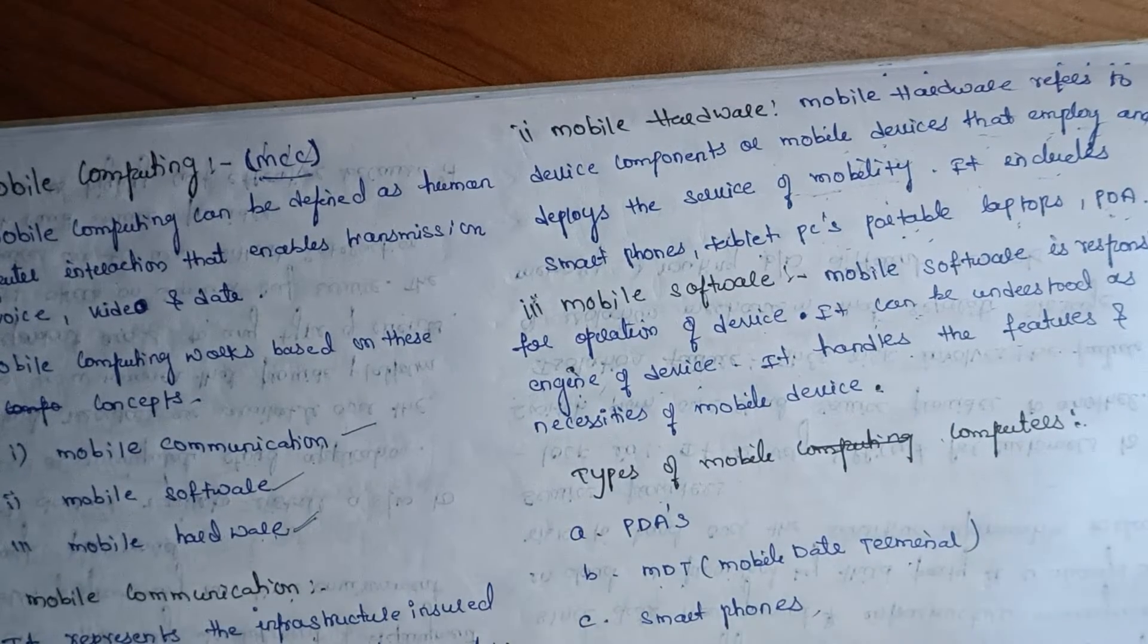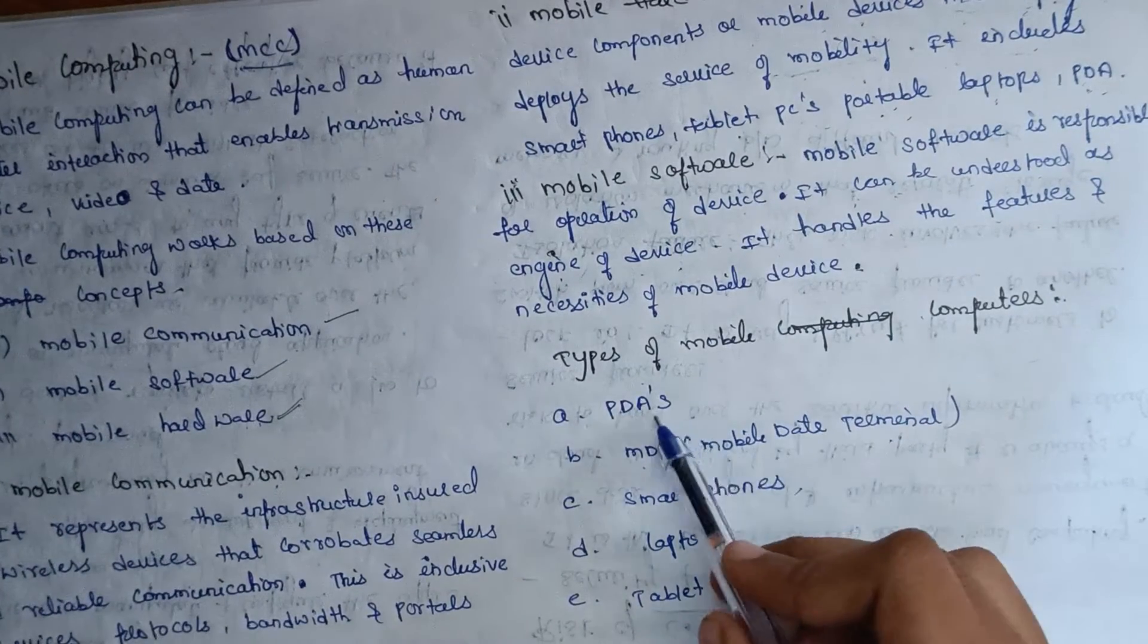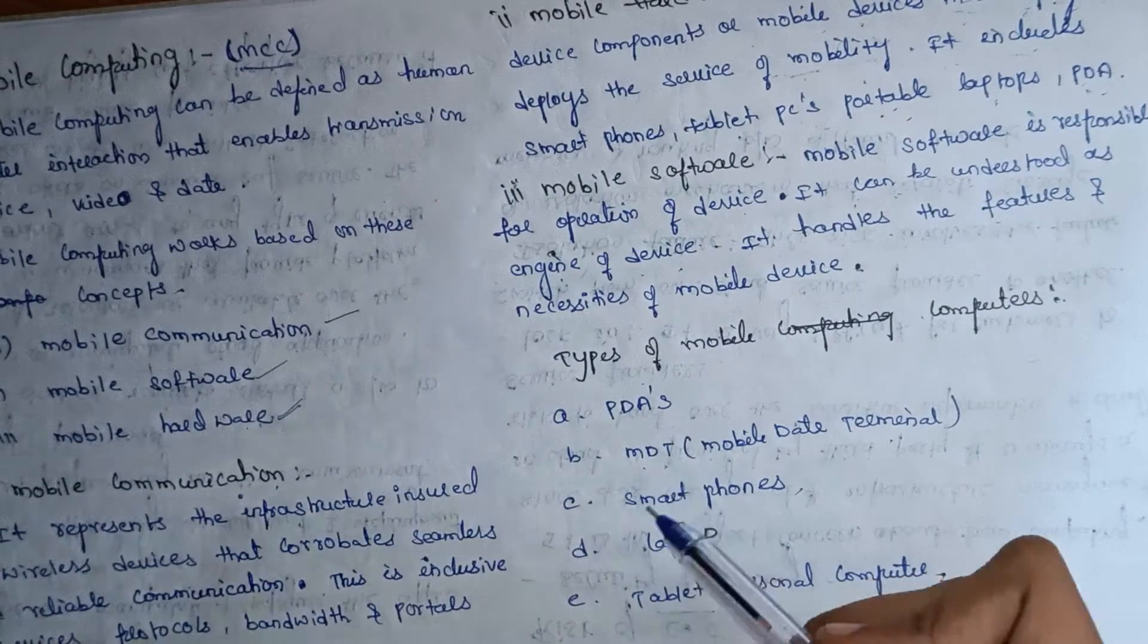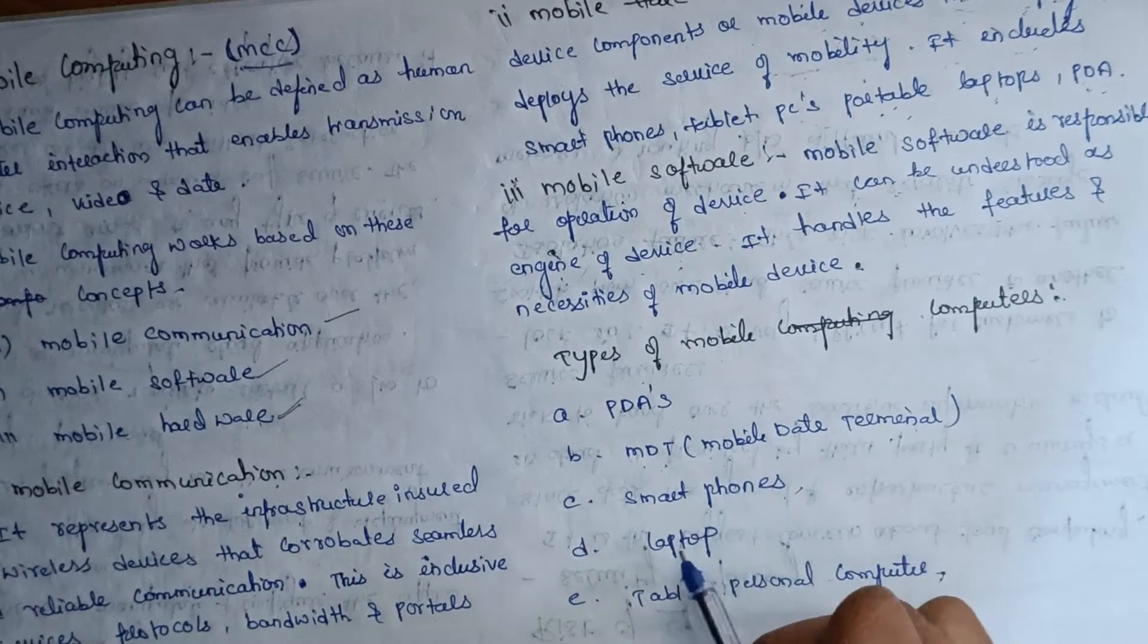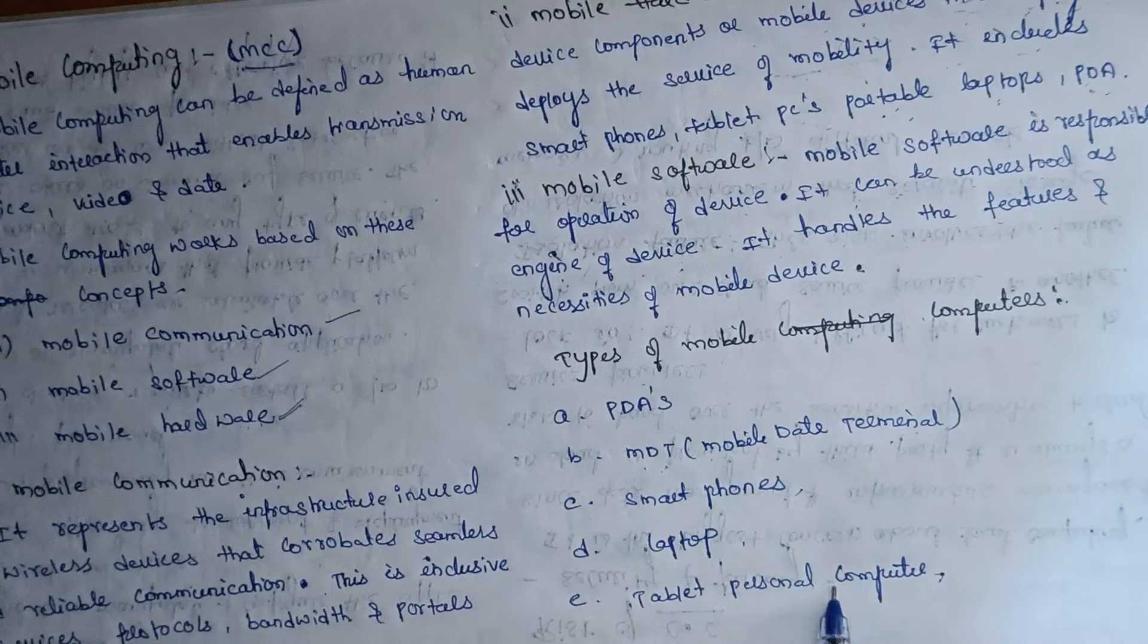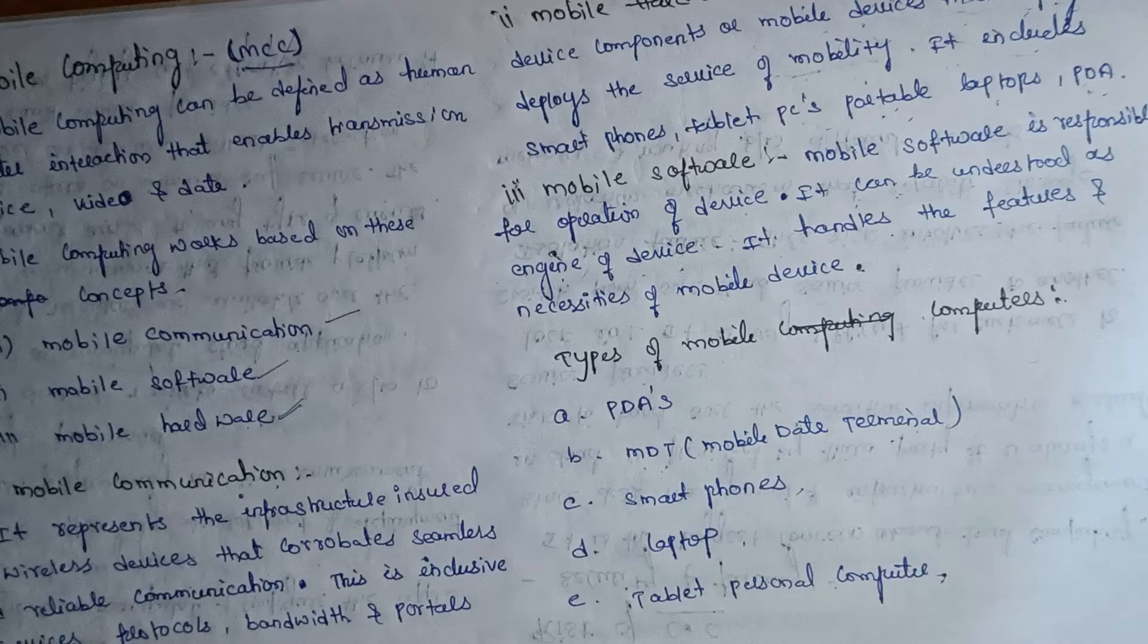Types of mobile computers include pads, wireless devices, MDT (mobile data terminal), smartphones, laptops, tablets, and personal computers. These are the various types of mobile computers we use.